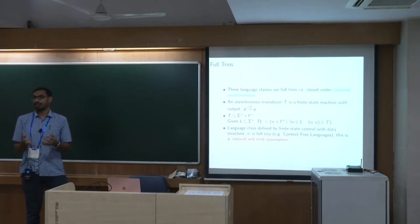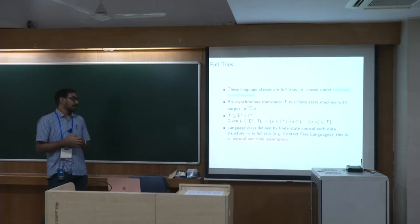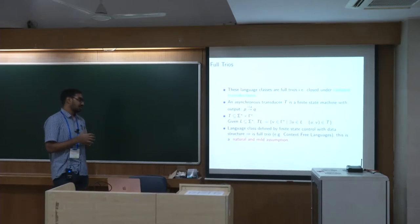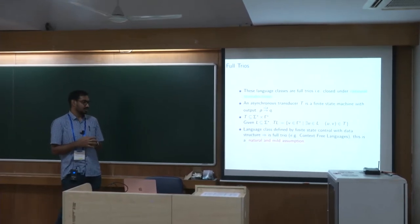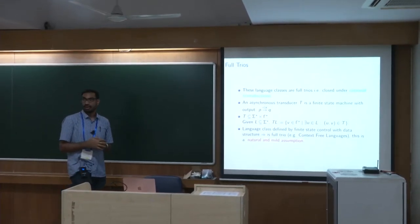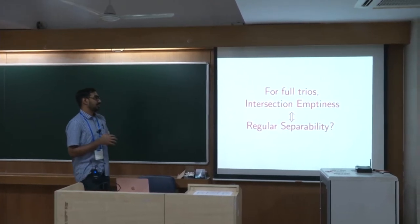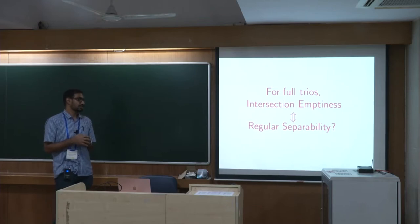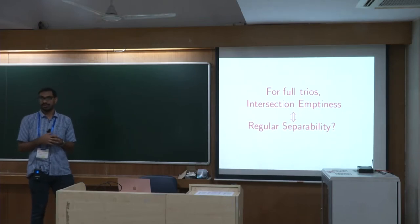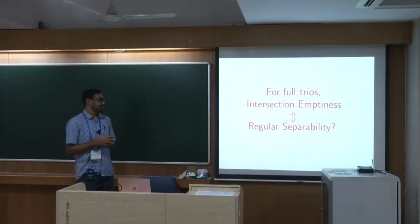Language classes defined by finite-state control with a data structure — such as a queue or a stack — are easily seen to be full trios. This is therefore a natural and mild assumption on language classes. We want to know whether for full trios these two problems always coincide, having seen that they do in many cases.